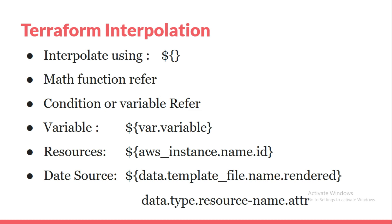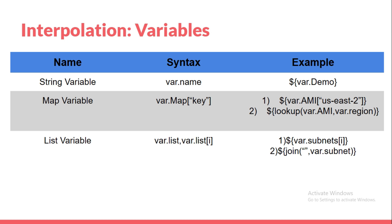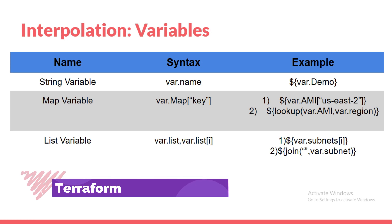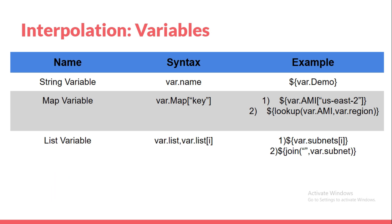For variables, we have three basic levels: string variable, map variable, and list variable. The syntax is the same — var dot name. For a map, you have to provide the key you want to use, similar to a Python dictionary. For a list, you provide the list with the index. If you don't pass an index it will return all items in the list, but if you want a specific item you should provide the index value inside the bracket.